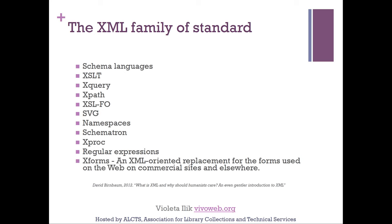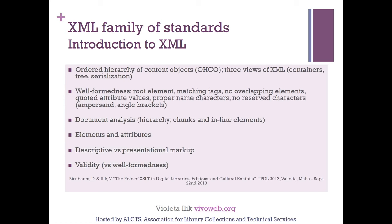XSL-FO is used with XSLT to transform XML into PDF documents. SVG is a scalable vector graphic — an XML vocabulary for describing graphics, useful in digital humanities projects such as creating graphic representations of textual data. For example, some digital humanists use it to transform a play into a bar graph illustrating how much each character speaks. Namespaces manage different XML vocabularies in the same project. Schematron is a constraint modeling language, XProc is a pipelining language for chaining transformations, and regular expressions provide flexible text matching. Today we will focus only on XML and XSLT.